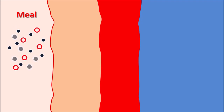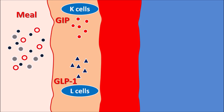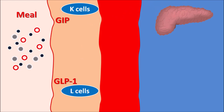After a meal, food content in the colon stimulates gastric motility, and colon stretching releases hormones called incretins. From the K cells, the incretin hormone GIP (glucose-dependent insulinotropic peptide) is released. From the L cells of the ileum, another hormone — GLP-1 (glucagon-like peptide 1) — is released. These two incretin hormones promote glucose-dependent insulin release, and their main target is the pancreas.